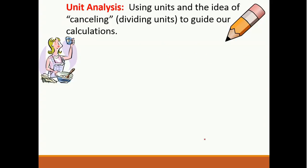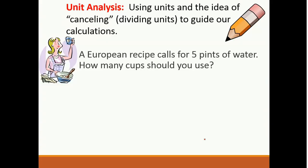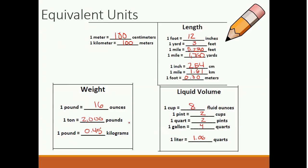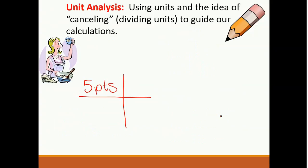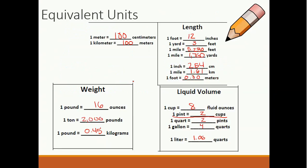Unit analysis is using units and the idea of canceling or dividing units to guide our calculations. I have a European recipe that calls for 5 pints of water. I need to know how many cups I should use. I'm going to set it up like this: 5 pints. Now, let's find that conversion factor from pints to cups. How many pints are in a cup? 1 pint is 2 cups. You need a pint over a pint, so they're going to almost kind of diagonal each other. So I said 1 pint is equal to 2 cups.